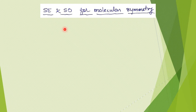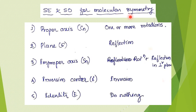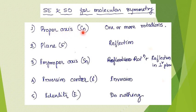On a molecule, different kinds of symmetry elements (SE) and symmetry operations (SO) are possible. This is for molecular symmetry, not crystallographic symmetry — in crystallographic symmetry, a few more will also come in. For molecular symmetry, these are the five symmetry elements and the corresponding operations performed on them.